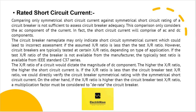Comparing only symmetrical short circuit current against the symmetrical short circuit rating of a circuit breaker is not sufficient to assess circuit breaker adequacy. This comparison only considers the AC component of the current. In fact, the short circuit current will comprise both AC and DC components. The circuit breaker nameplate may only indicate short circuit symmetrical current, which could lead to incorrect assessment if the assumed X by R ratio is less than the test X by R ratio.